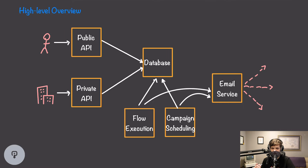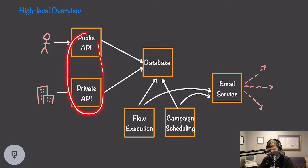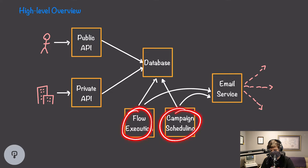Now that we understand the requirements, let's take a look at a high-level overview of the system. To track information about email profiles and their events, we'll need a public API that people can access directly — used on company websites so that when users perform specific actions, they're logged in our system. We also need a private API that companies can use to set up flows, campaigns, and lists, and to monitor metrics. Both APIs will access a database storing campaigns, flows, profiles, events, and lists. We'll also need a flow execution service and a campaign scheduling service.